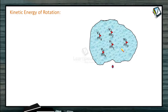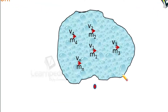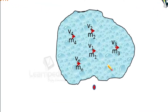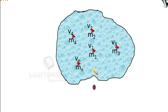First of all, kinetic energy of rotation. In the figure, we have a rigid body. It is going to move in a pure rotational motion. All of its constituent particles move on a circular path with radius r1, r2, r3, and so on up to rn.